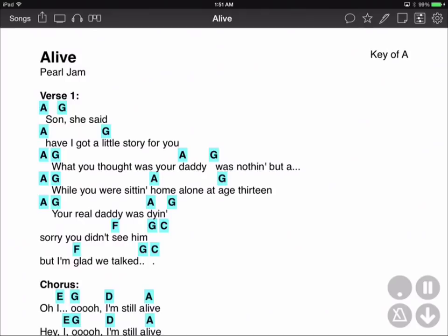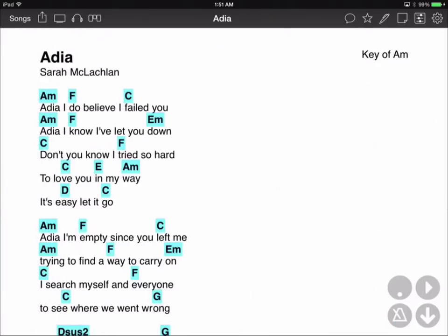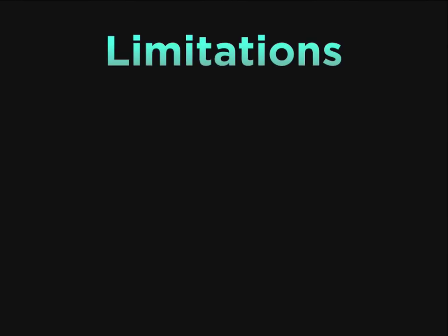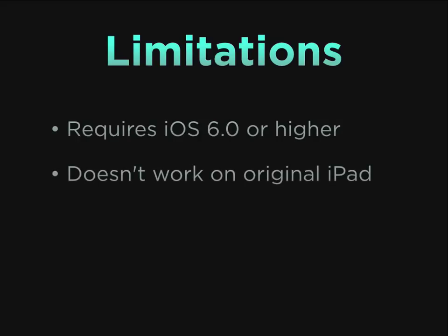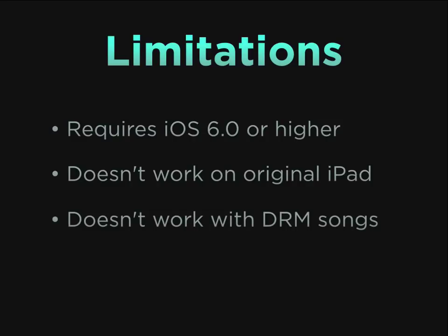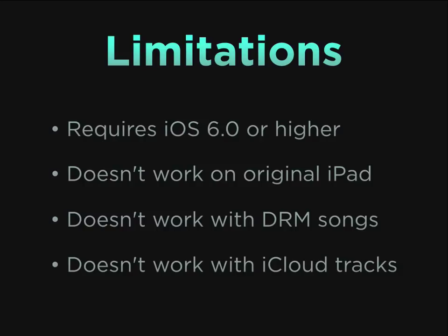Now let's switch back to Adia and tap the play button. That didn't work. Let's go over a few situations that may arise that will cause OnSong not to be able to crossfade. First, you need to be running iOS 6.0 or higher. Earlier versions of iOS can only use the built-in music player to play songs in your music library. But we're running this on an iPad Air, so that's not the issue. If you're playing older tracks that are using DRM, or Digital Rights Management, or if you are playing songs off of iCloud using iTunes in the Cloud, the built-in music player is used, and that doesn't let us crossfade.